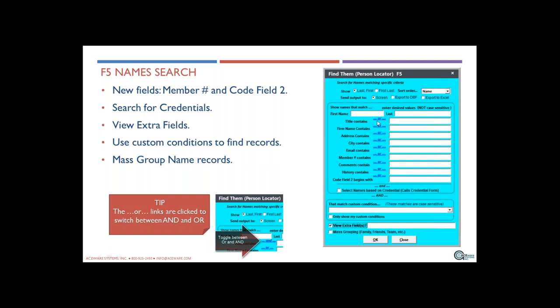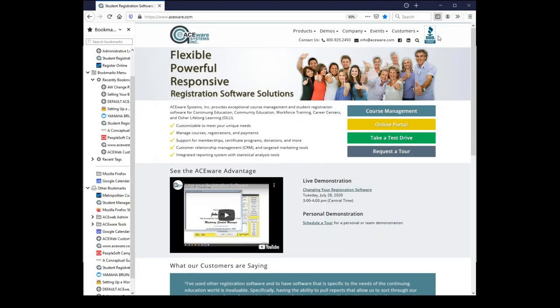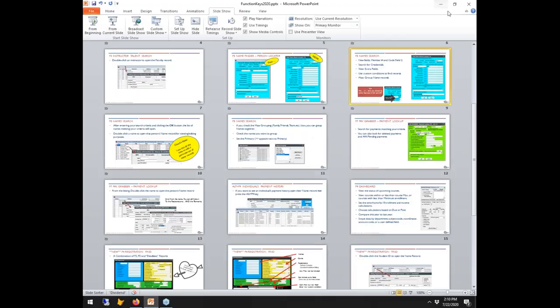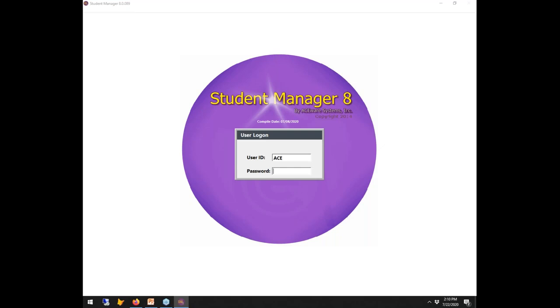Another new thing on the F5 key is that you can now use an either/or connection — you can have the match between multiple criteria be either an 'or' or an 'and' designation, expanding or contracting the type of search. I'm going to break my rule and go ahead and open Student Manager live, so stay with me while we get logged on.